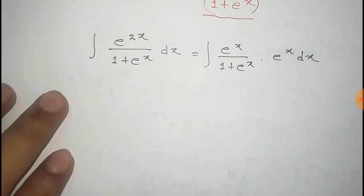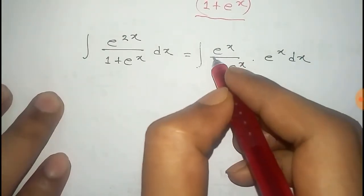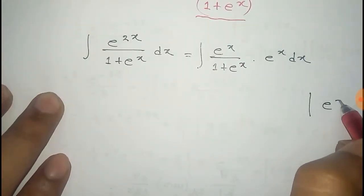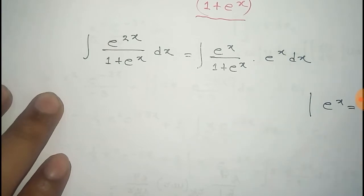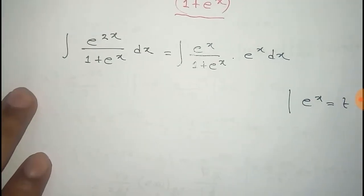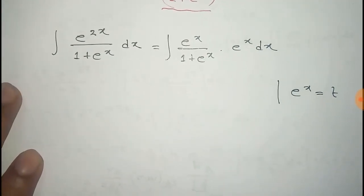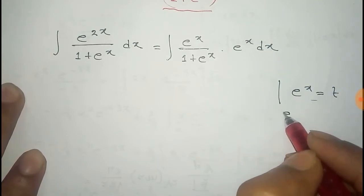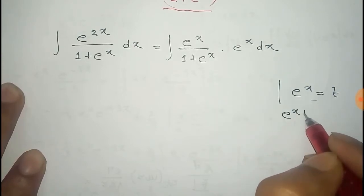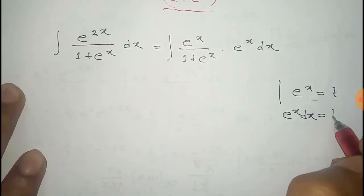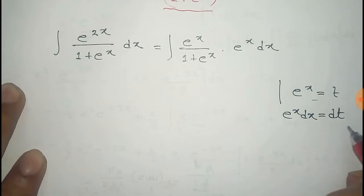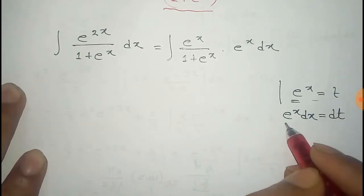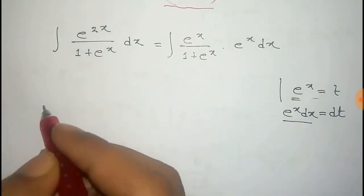Now consider the value of e to the power x as t. So let e to the power x equal to t, another variable. Differentiating both sides, we get e to the power x dx equal to dt. Now put the value of e to the power x and e to the power x dx in this equation.